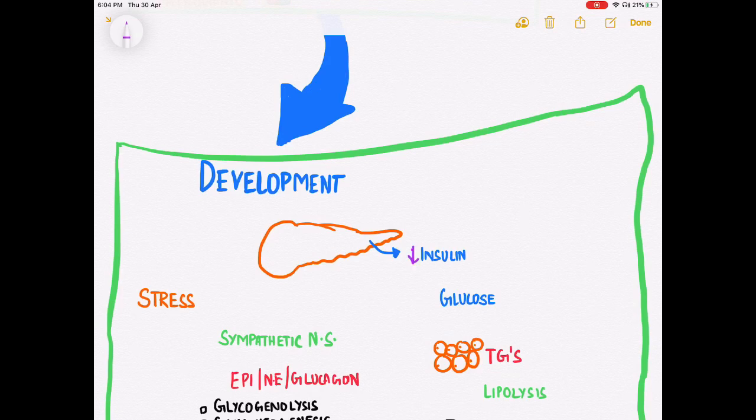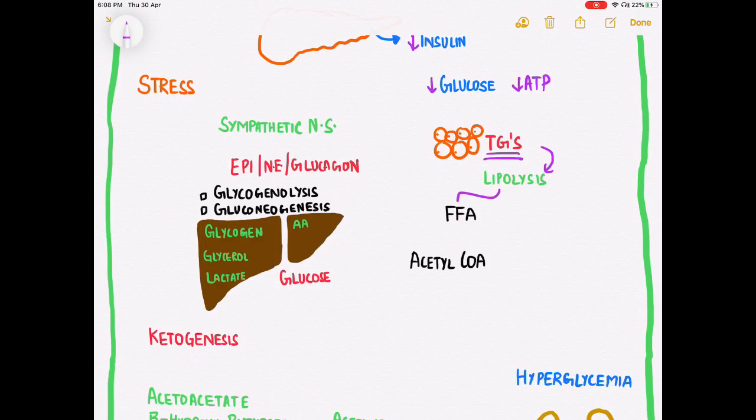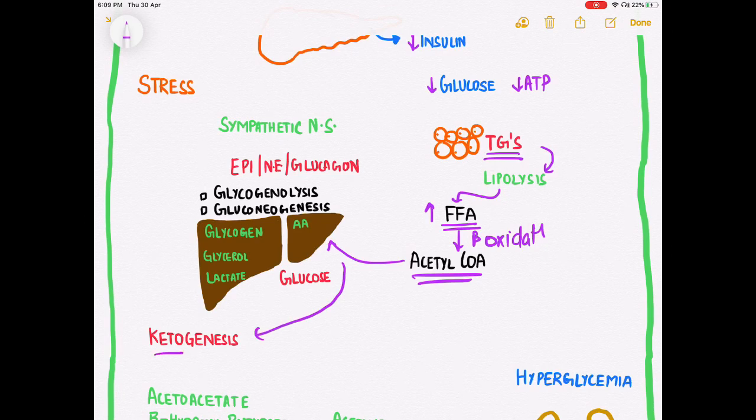Due to any of these conditions, there is reduced synthesis of insulin from the beta cells of the pancreas, so less glucose is available for consumption by cells and ATP production decreases. The body resorts to secondary energy sources such as triglycerides. Triglycerides undergo lipolysis, leading to increased production of free fatty acids in the blood. These free fatty acids undergo beta-oxidation to produce acetyl-CoA.